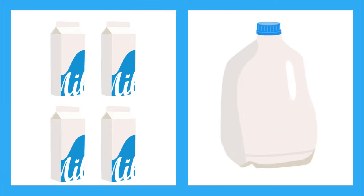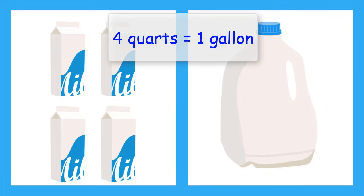Now let's compare quarts to gallons. There are four quarts in one gallon. So we can say four quarts equals one gallon. I use a little trick to remember this one. Quart sounds like quarter. And a quarter is one fourth. So there are four quarts in one gallon.